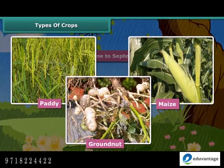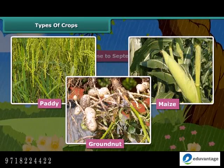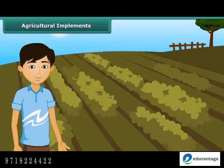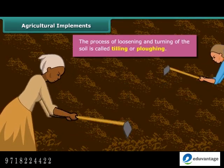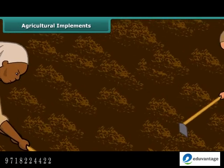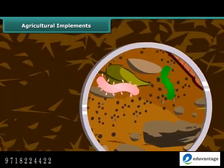To grow crops, various activities are performed which are known as agricultural practices. Let us know them one by one in detail. Dear friends, do you know how farmers grow crops in a large field? First of all, they prepare the soil for growing the crop. For that, they turn the soil and loosen it. The loosened soil helps in the growth of earthworms and microbes present in the soil. These organisms are also known as farmers' friends.